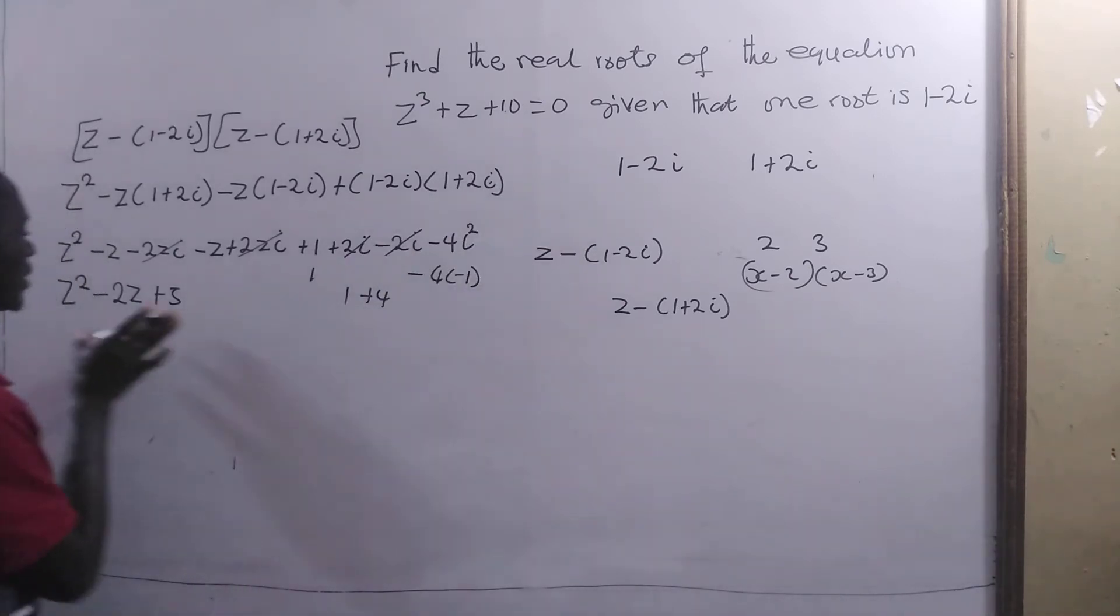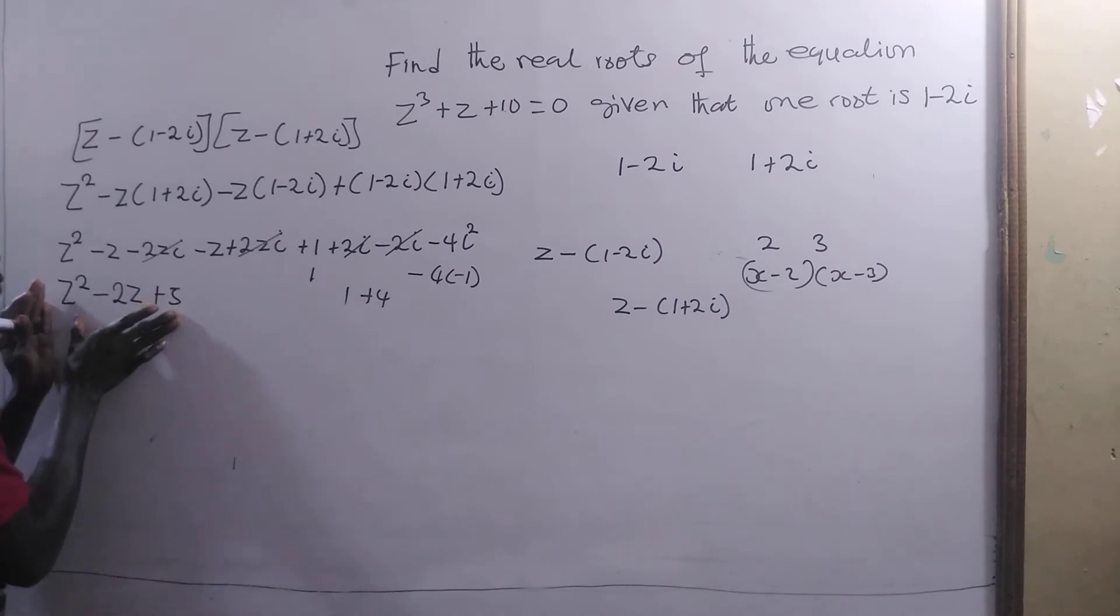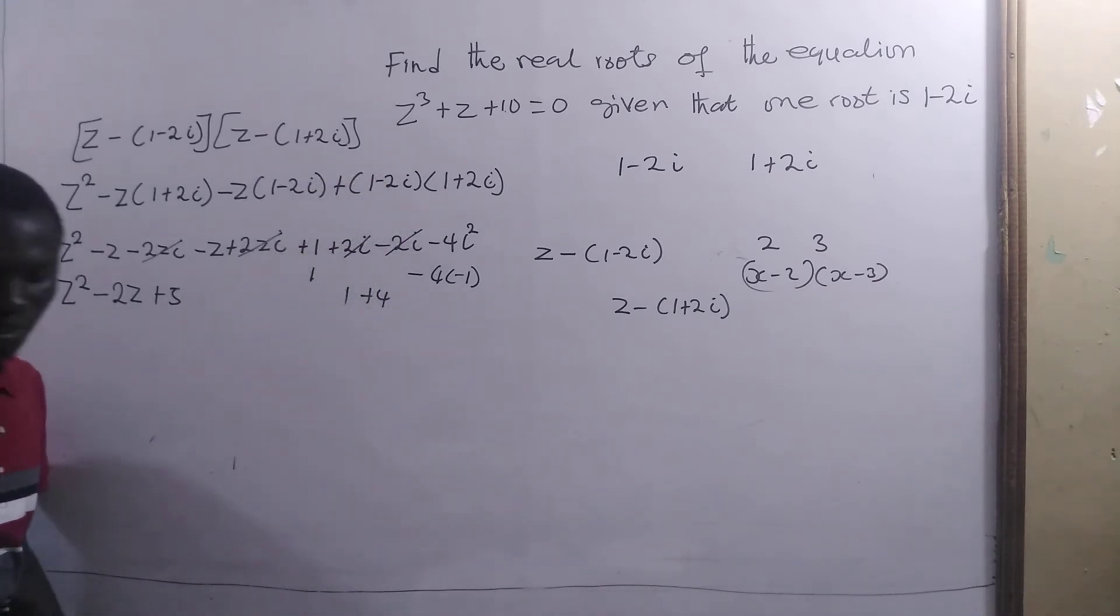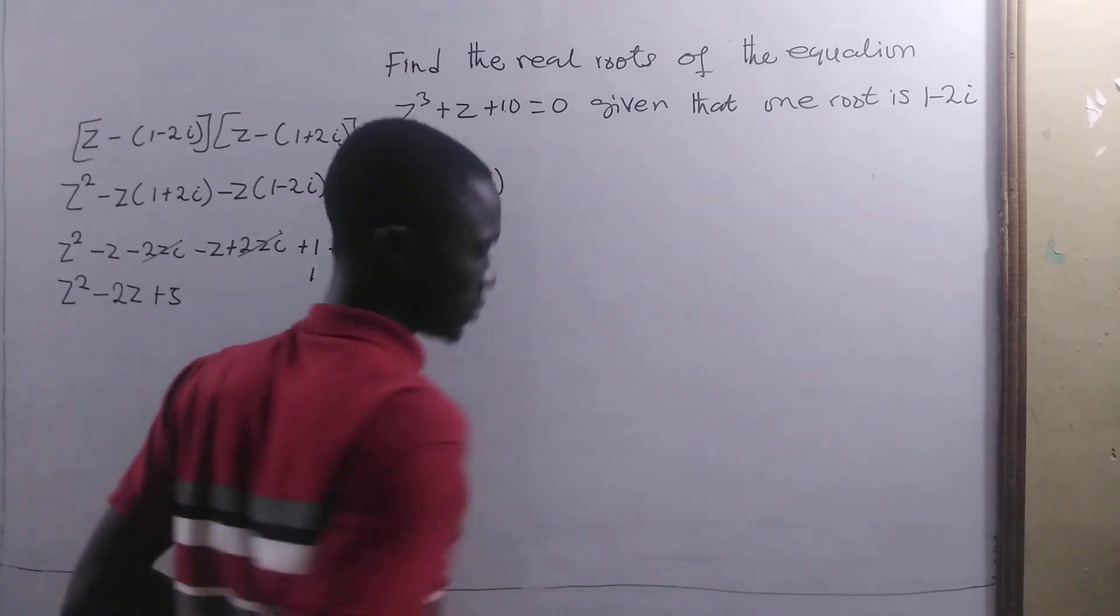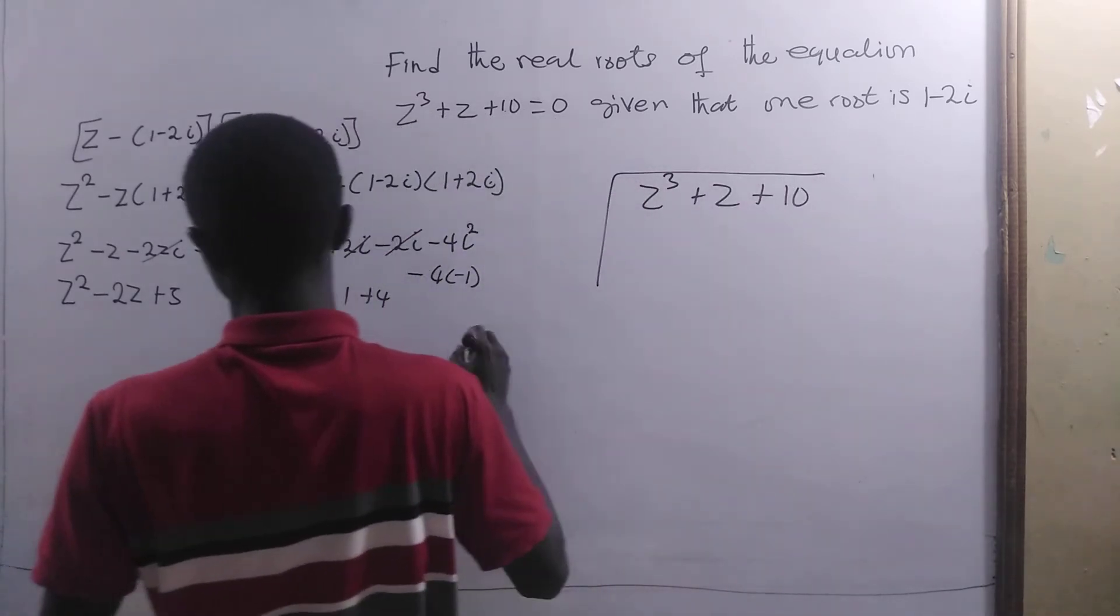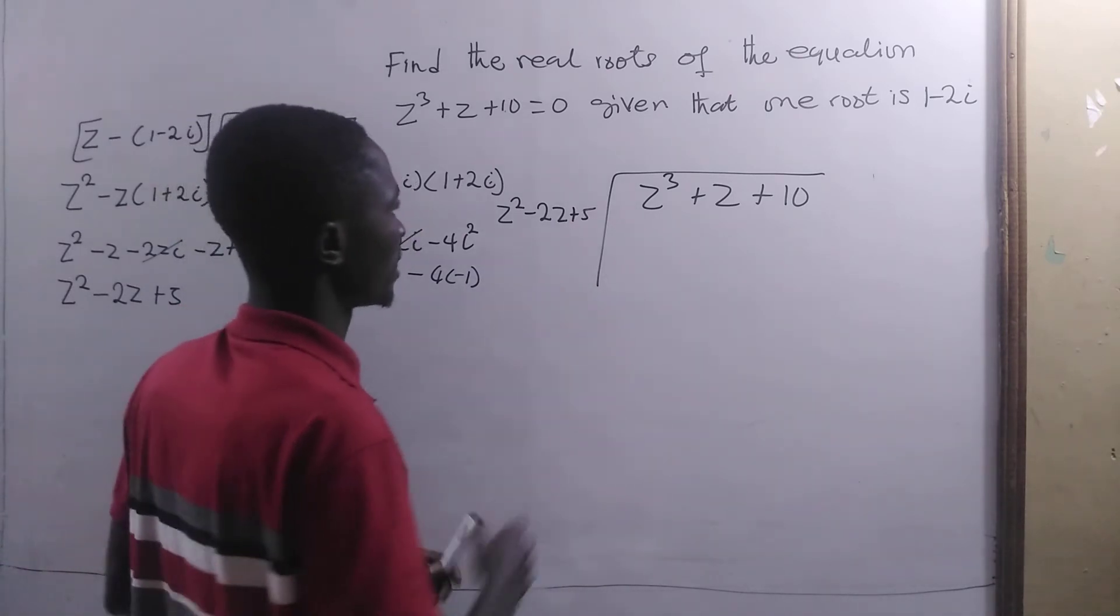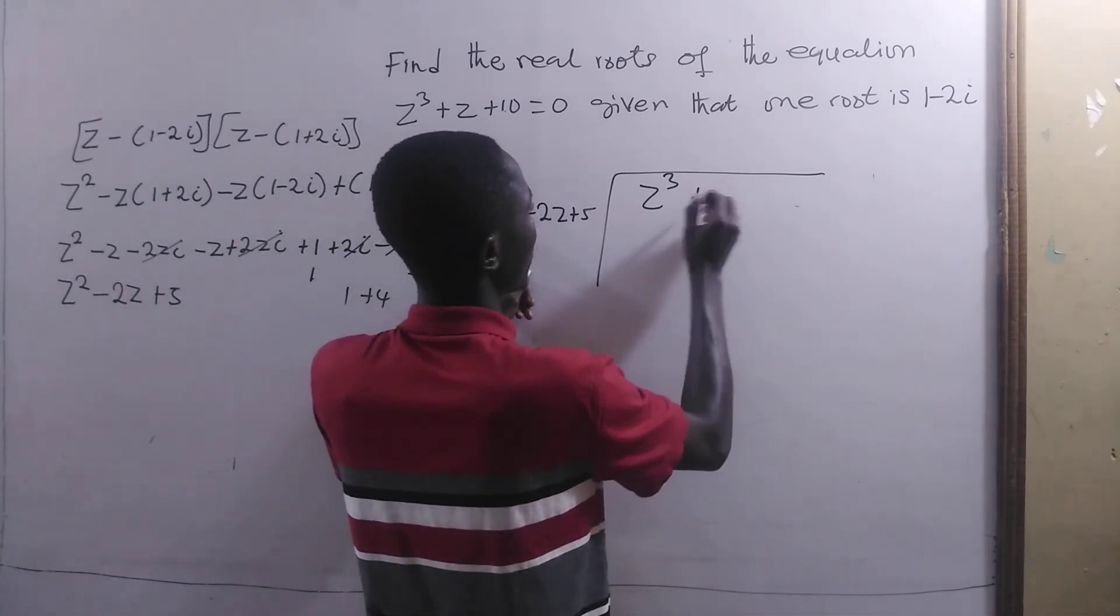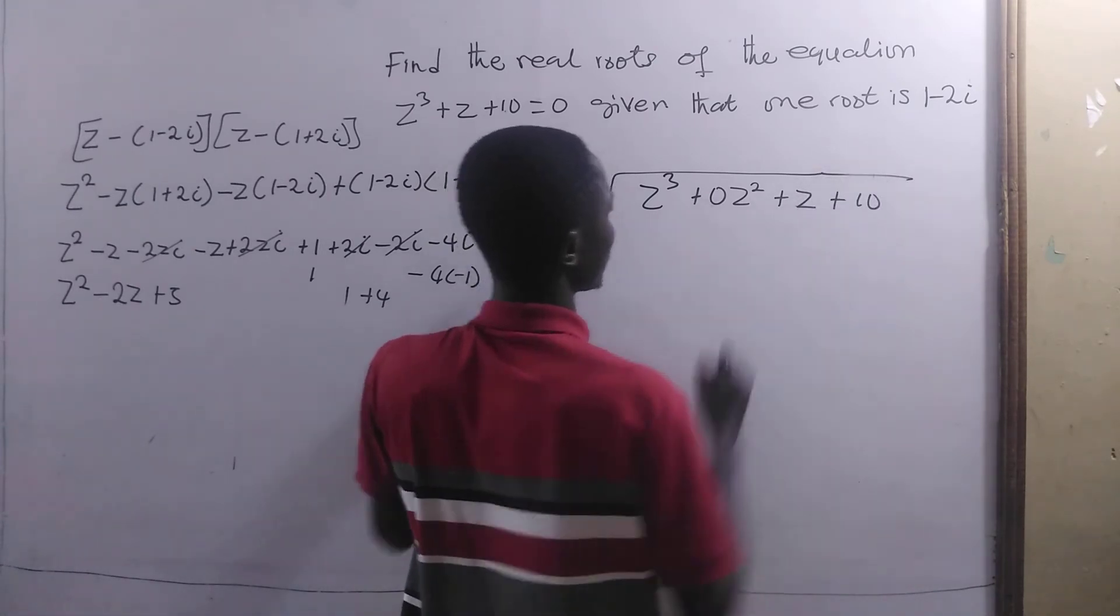If we multiply the roots, this is what we are going to get. If we have the product of two of the roots, we can find the other roots very simply. Here we are going to take z³ + z + 10 and divide by z² - 2z + 5. We have to fill in with zeros, so let's fill that with +0z² + z + 10.